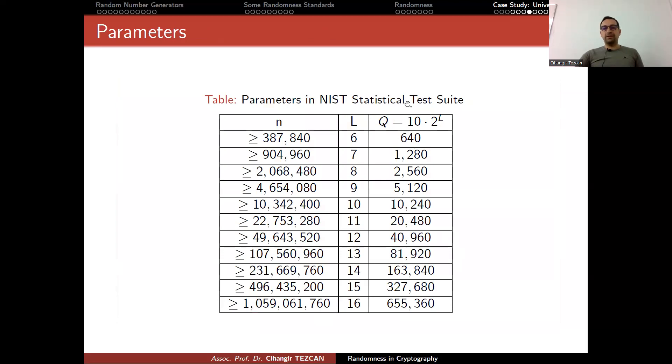In this document, it says that if your sequence length is larger than this many bits, you choose the block size as 6. First 640 bits are the initialization part. Then you use the remaining part for the test. This means that you can use this test only when your input sequence is larger than this many length. But this is not a good thing. For instance, I want to check the randomness of a block cipher with a block size of 128 bits. But I cannot use this test to check that length. It has to be something very long.